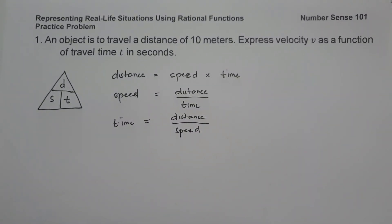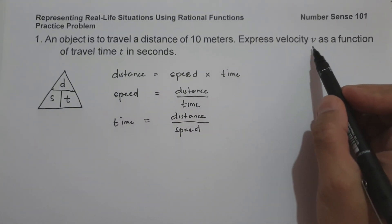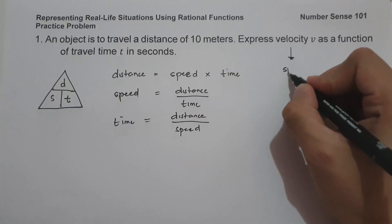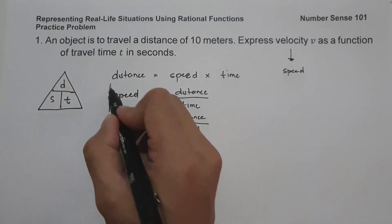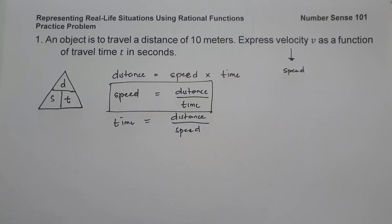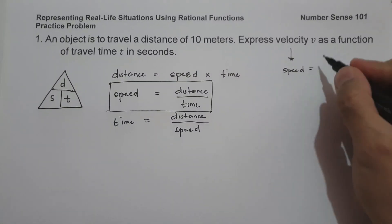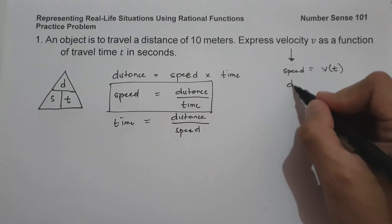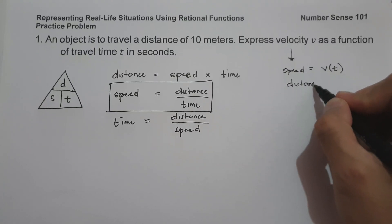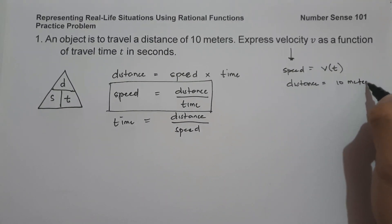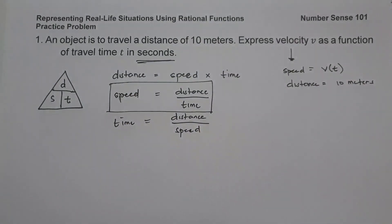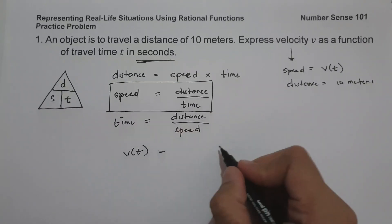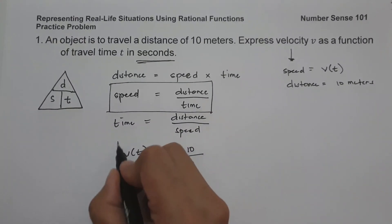In our problem, we have to express velocity v as a function of travel time in seconds. Velocity is the same as speed, so we are going to use the speed formula. So v(t) equals distance, that is 10 meters, divided by time in seconds. Therefore, v(t) = 10/t, and this will be our answer.